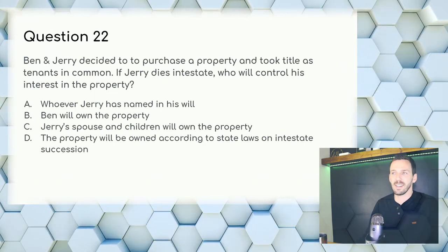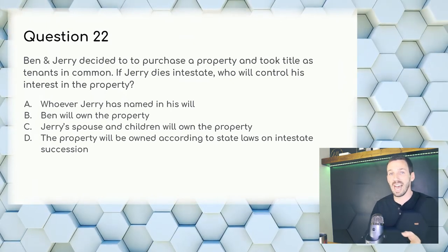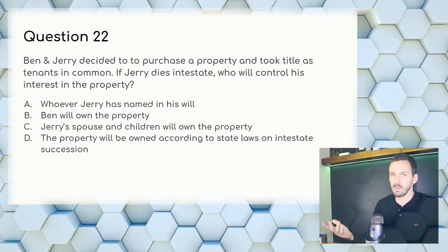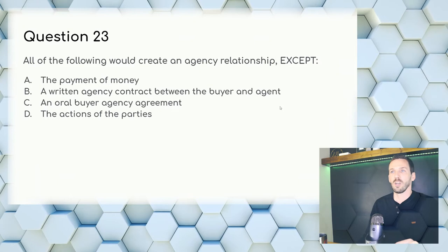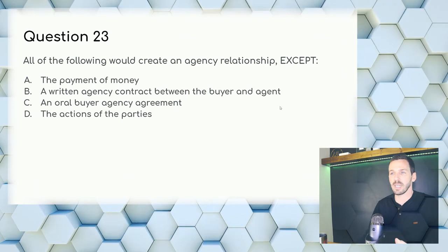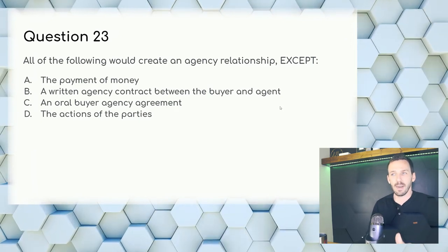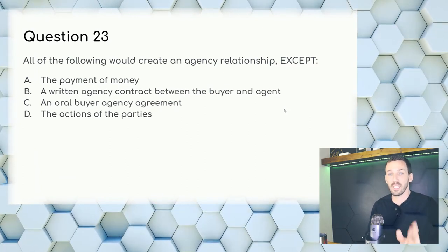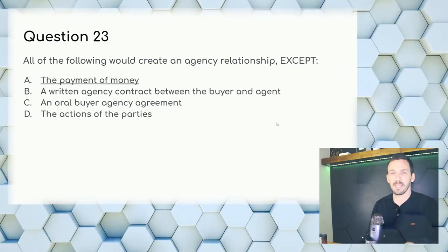Question 22: Ben and Jerry purchased a property as tenants in common. If Jerry dies intestate (without a will), who controls his interest? Answer: his heirs via intestate succession — not whoever he named in a will, since there is no will. Question 23: All of the following would create an agency relationship except — money never creates a relationship. Answer: A, the payment of money.